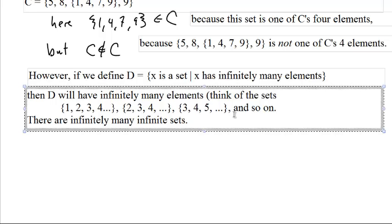This one, 3, 4, 5, going on and on forever. Oh, that one's different too. It doesn't have 2, so it's not this one. It doesn't have 1, it's not this one. It's a totally new set. It's infinite. We can do this forever. We can easily come up with an infinite number of infinite sets.